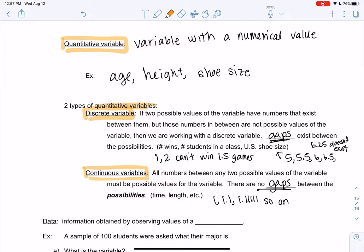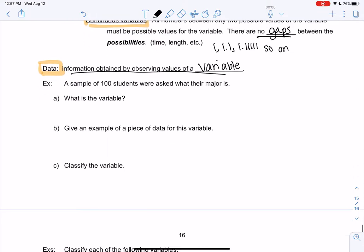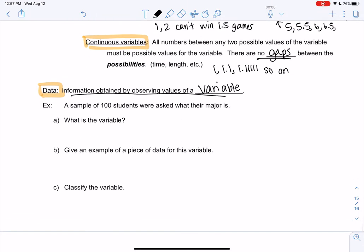One last word, and we'll jump into examples. Data is basically what we're going to do in statistics. It's the information obtained by observing values of a variable. So we collect data by collecting variables from lots of different people. So I just have a couple examples, and we're done with our first chapter.